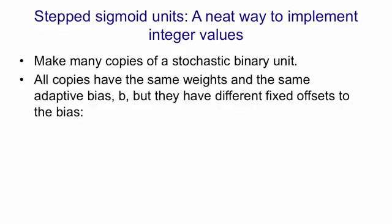All the copies have the same weights and the same bias that's learned, b. But in addition to that adaptive bias, b, they have a fixed offset to the bias. The first unit has an offset of minus 0.5. The second unit has an offset of minus 1.5. The third one has an offset of minus 2.5, and so on.